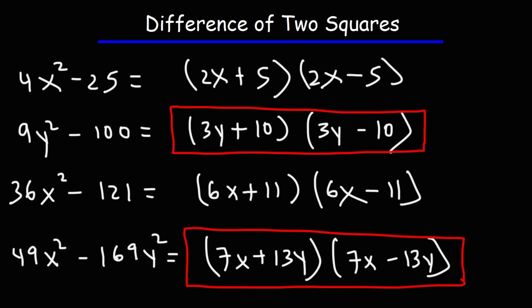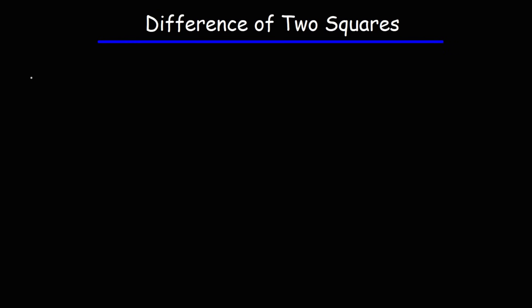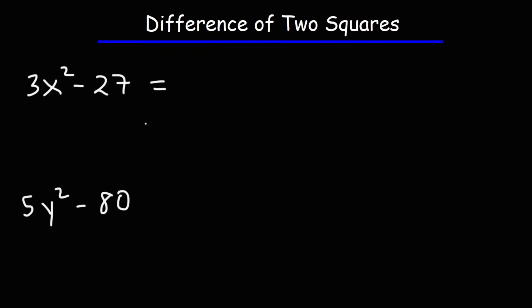So that's the process you can follow in order to factor a problem that contains a difference of two squares. Now try these two problems: 3x squared minus 27, and 5y squared minus 80. Notice that if we take the square root of 3, we're not going to get a nice whole number. Whenever you encounter a situation like this, focus on finding the GCF — the greatest common factor. The GCF between 3 and 27 is 3.